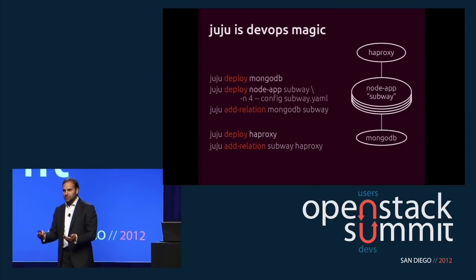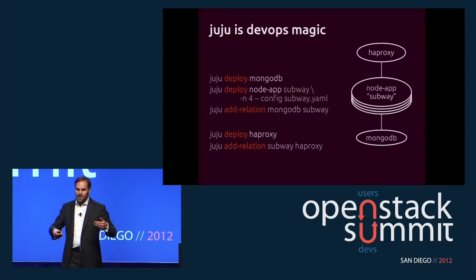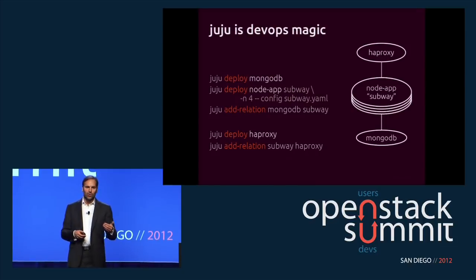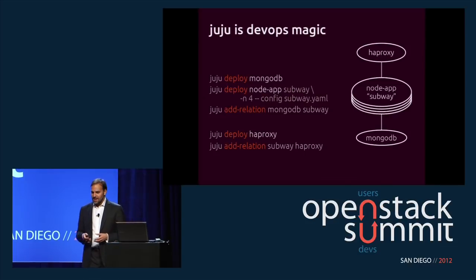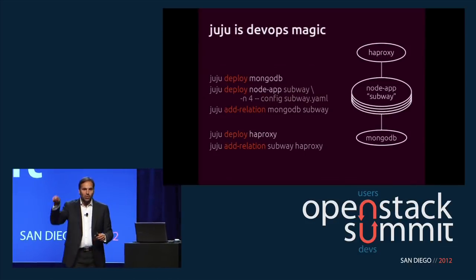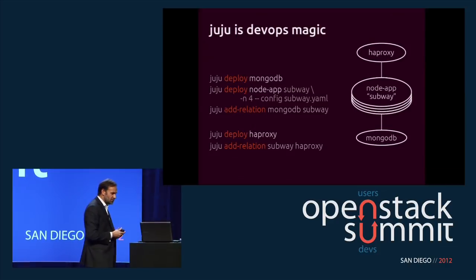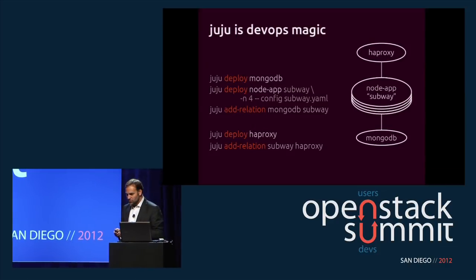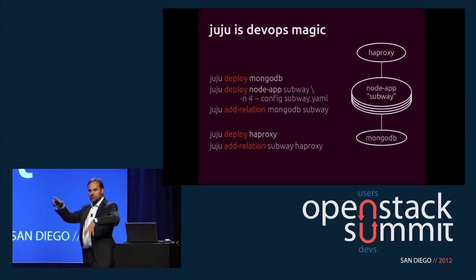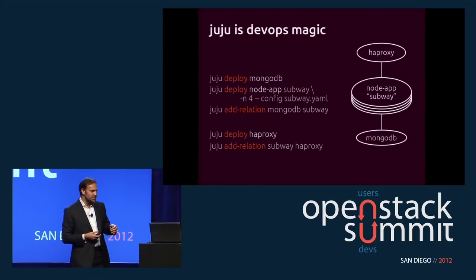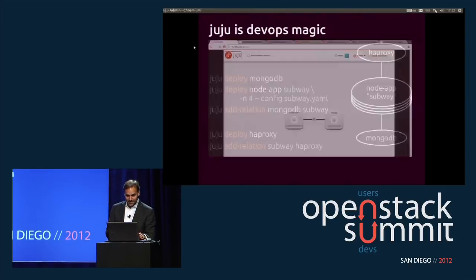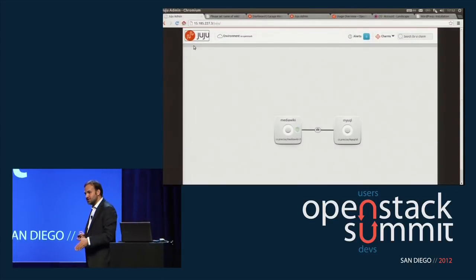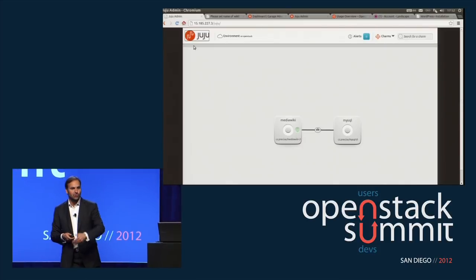As we've taken this into production and worked more with company developers who spend most of their time in Visual Studio or Eclipse, we kept getting asked whether Juju could have a GUI. We noticed people had whiteboards where they'd drawn out service diagrams. So we thought, wouldn't it be fantastic if Juju had a GUI that let you just draw what you wanted and deploy it onto OpenStack? Today I'm really delighted to show you, for the first time in public, the HTML5 open source GUI for Juju.